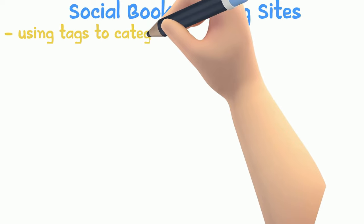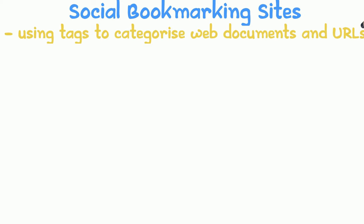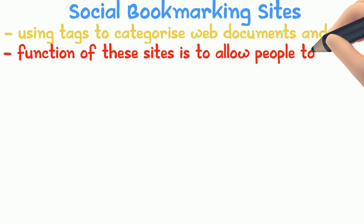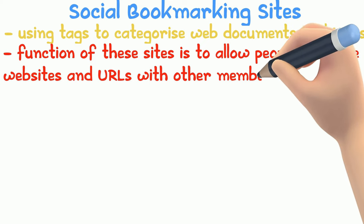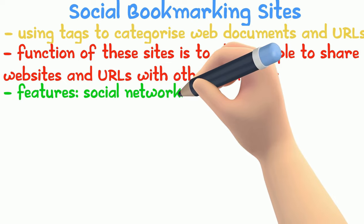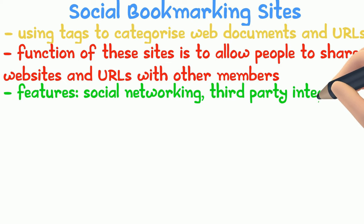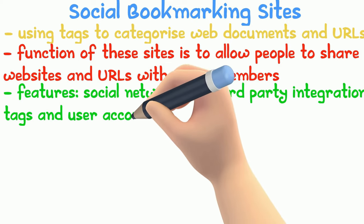Social bookmarking sites use tags to categorize web documents and URLs. Their function is to allow people to share websites and URLs with other members. Features include social networking, third-party integration, tags, and user accounts.